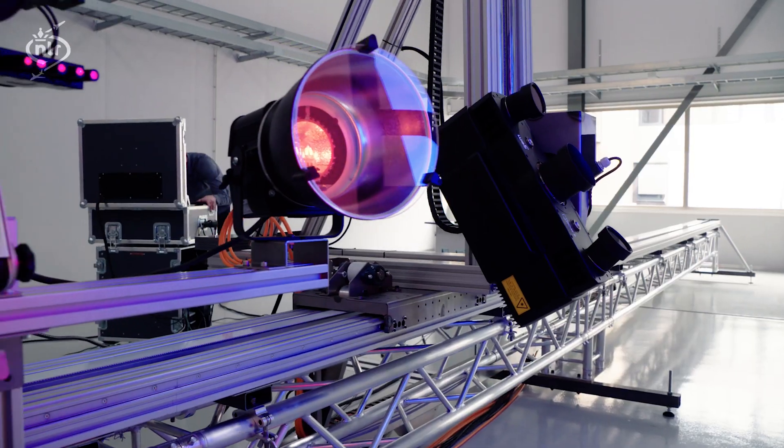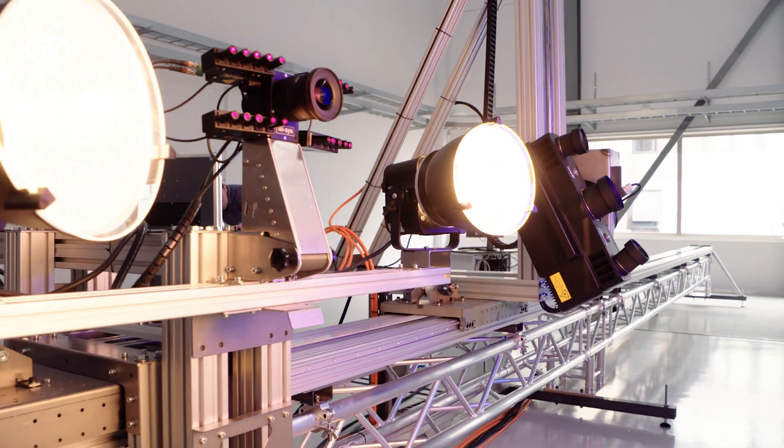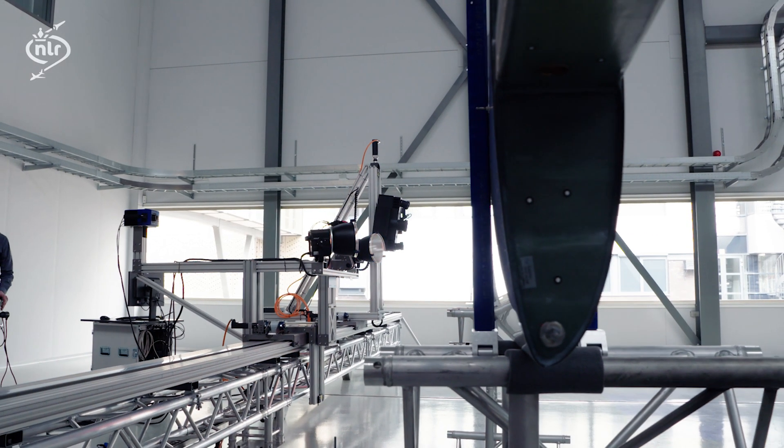You can use the inspection robot for a lot of different things. We can also use it for helicopter rotor blades, the radomes of aircraft, or parts that are not even aircraft related.